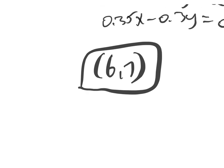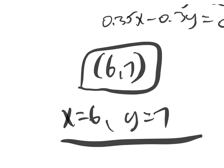So here we have the point (6, 7) as a solution, meaning that x equals 6 and y equals 7.